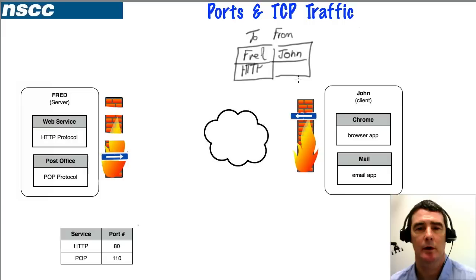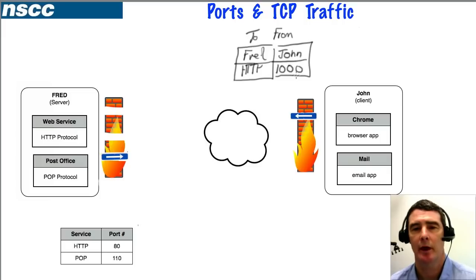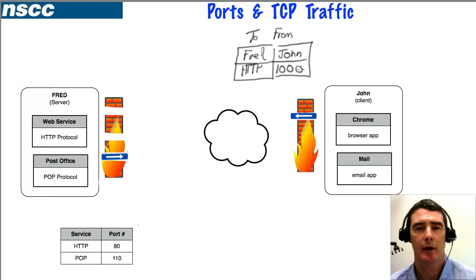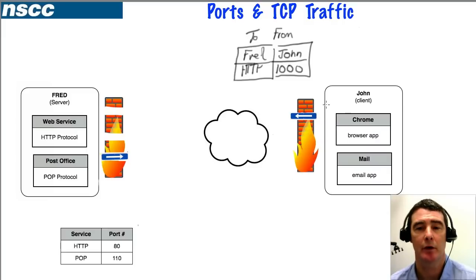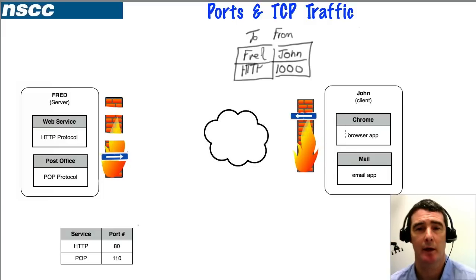The source port is not a well-known port — applications generally pick a random port above 1000 that isn't already in use, so we'll just pick 1000. It's important to have a source port, because when return traffic comes back the computer uses that port number to determine which application — the mail app or the browser — should receive the returned information.